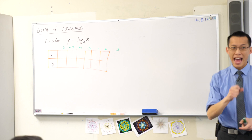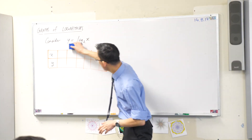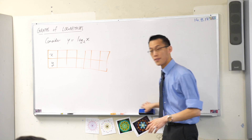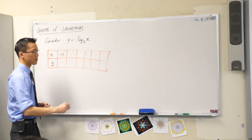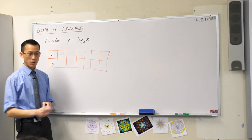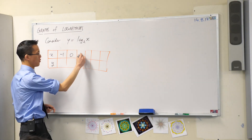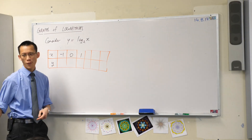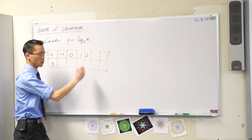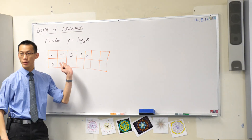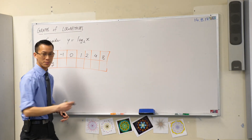So the actual values I want you to write down are: the first one, negative 1; the second, 0; then 1 — so far still very similar to what we'd normally do. It'll be similar for the next one too, but then here's where it changes: 4 and 8.